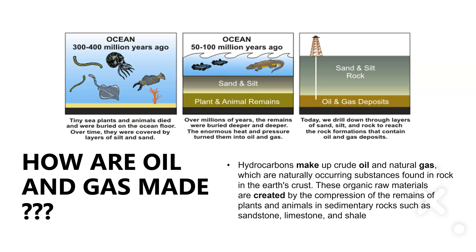Oil and gas happen in a marine environment, when ocean life or sea life dies and is buried. Unlike land plants, we're looking at things like plankton and phytoplankton, which consist of hydrocarbons that can be buried over time after they die and compressed into oil and gas reserves. These can then be extracted and used as fossil fuels, and are often found in sedimentary rocks like sandstone, limestone, and shale formed in marine environments.